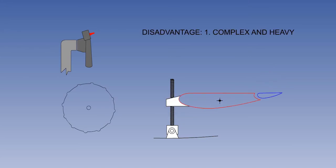The only disadvantage of the variable incidence trimming tailplane is that it is heavier than a trim tab and more complex. This disadvantage is far outweighed by its advantages.